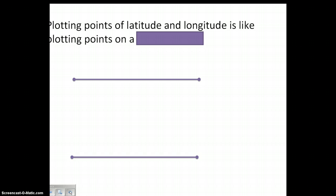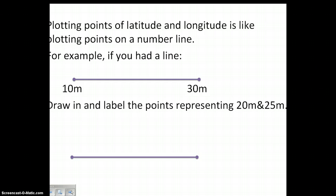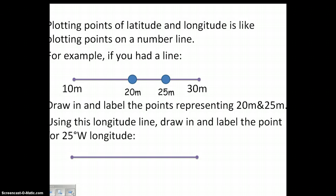Okay, so continue to take notes here. Plotting points of latitude and longitude is like plotting points on a number line. Now, why do I use a number line? Because we need to really practice accurately plotting. Because you'll have to do a lot of this in latitude and longitude. So for example, if this is 10 meters and 30 meters and we wanted to draw in the points representing 20 and 25, here would be your 20, right in the middle. And then finally, your 25. So in order to find 25, you don't just kind of guess. You take the middle point of 10 and 30 and then take the middle point of 20 and 30. Using this longitude line, draw in and label the point for 25 degrees west. So if we had 30 degrees west here and 15 degrees, simple. We're plotting it here. How would I have done that? I would have first found 20 there in the middle.